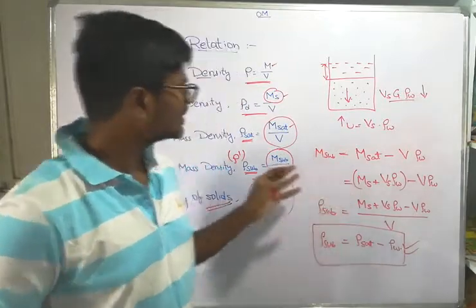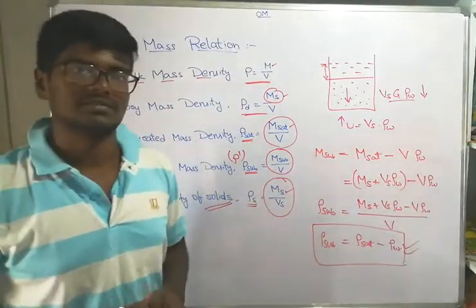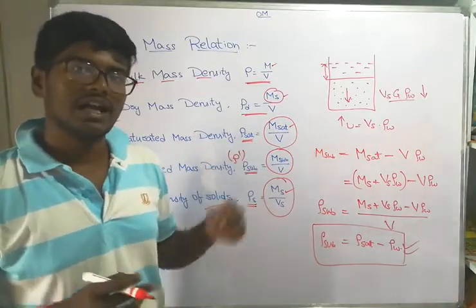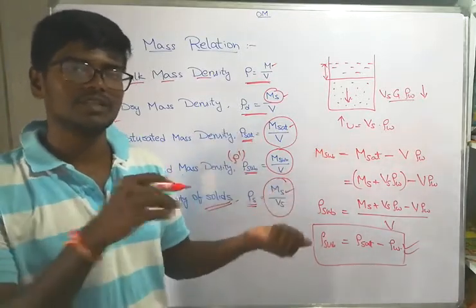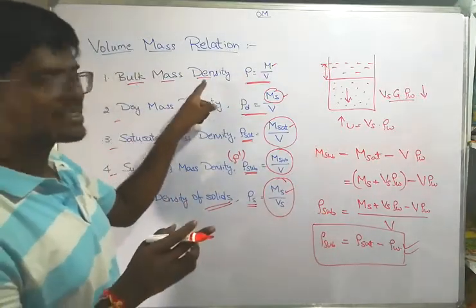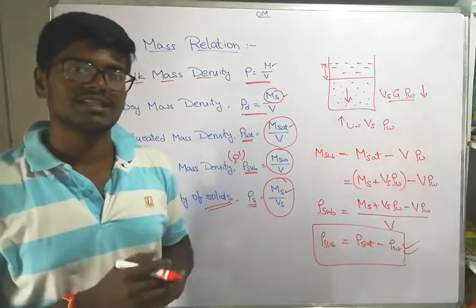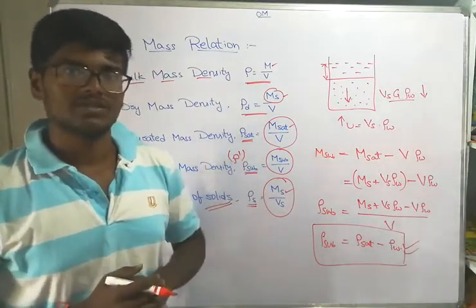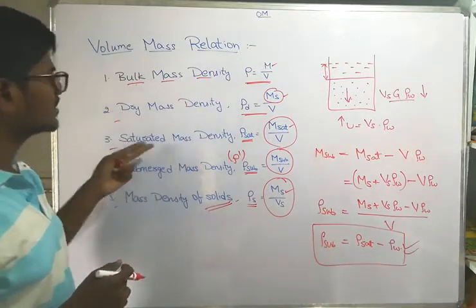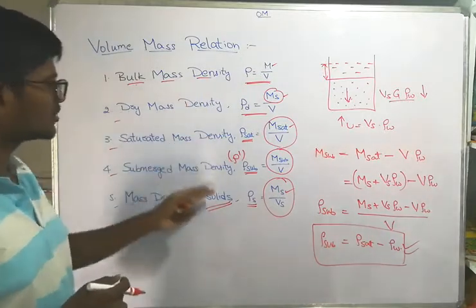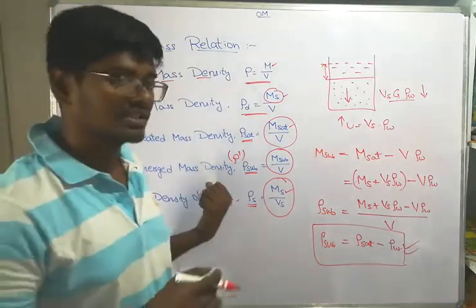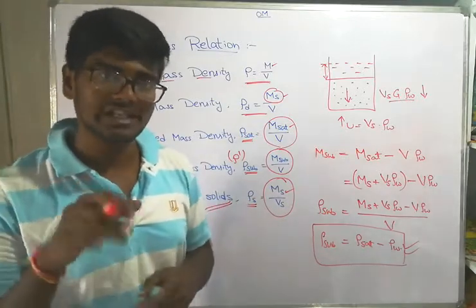This is the volume-mass relation of a soil. In addition to density (mass by volume), we also have unit weight types: unit weight of the soil, dry unit weight, saturated unit weight, submerged unit weight, and unit weight of the solid particles.